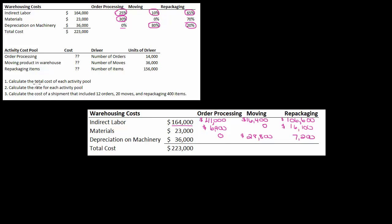So now let's figure out the total cost of each activity pool. For order processing, I add the $41,000 for indirect labor plus $6,900 for materials, and the total cost of order processing is $47,900. For moving, $16,400 plus $28,800 is $45,200. Then adding $106,600 plus $16,100 plus $7,200, the total cost of repackaging is $129,000. That's how you allocate your costs to each of your activity pools.